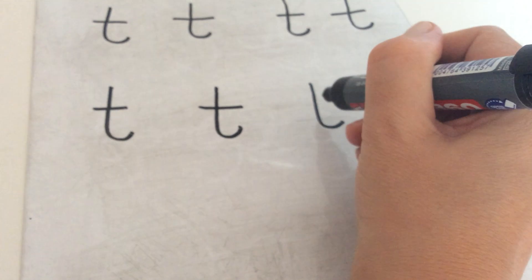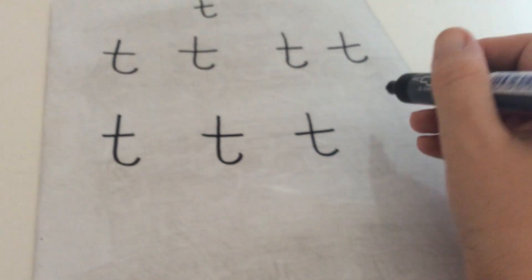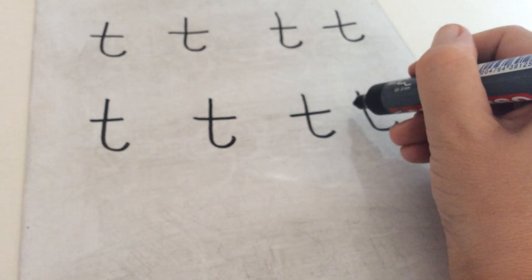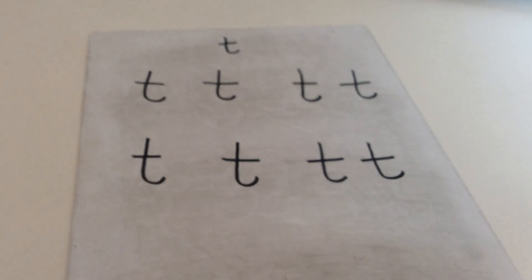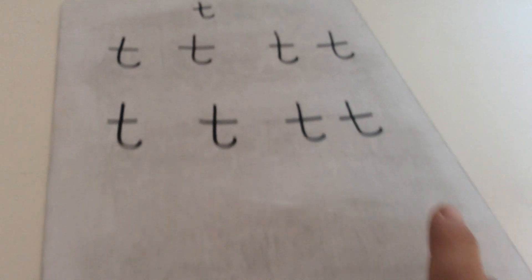Down his back, curl round, cross through. Down his back, curl round, cross through. Down his back, curl round, cross through. So your T should look like that.